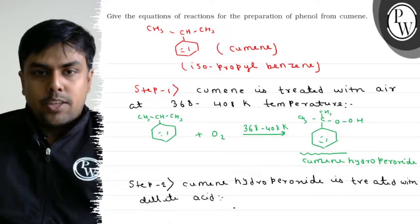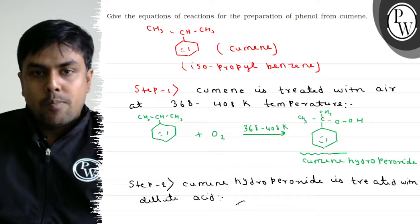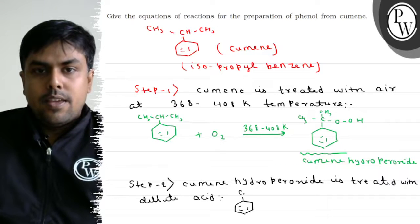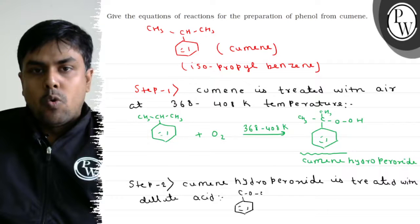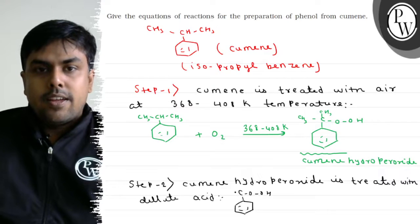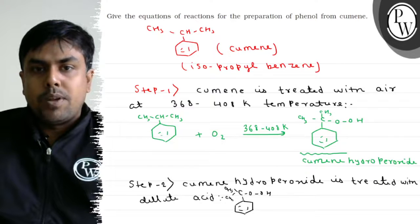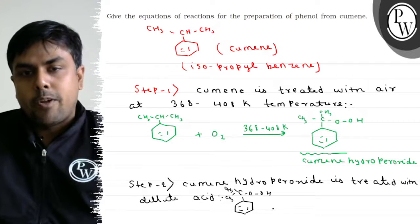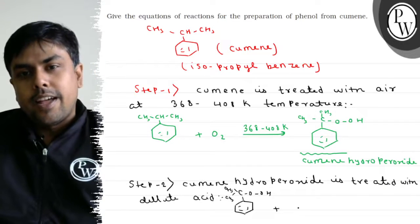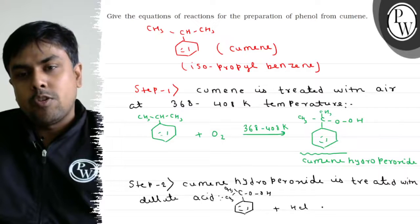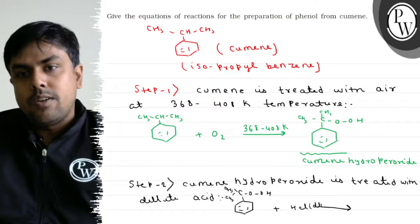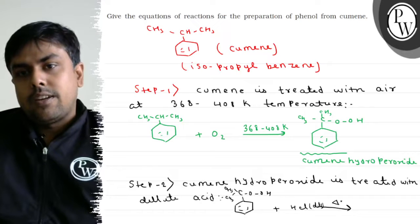We have cumene hydroperoxide with the structure: benzene ring with C(CH₃)₂–O–O–H. This is treated with dilute HCl or H₂SO₄ under dilute conditions with heat.